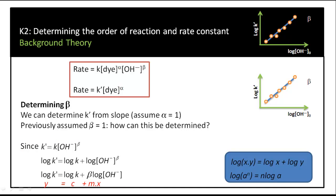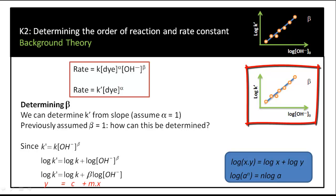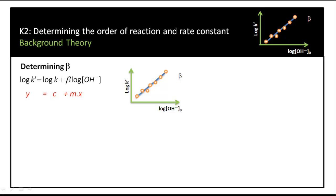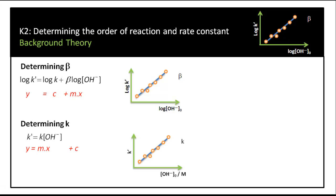In our experiment we will do this several times at several different concentrations of hydroxide ion, measure the pseudo first order rate constant k-prime, and plot this graph to determine beta. We can also determine k, the true second order rate constant, because k-prime equals k times the hydroxide ion concentration. We are going to find that beta equals 1, which means k-prime plotted against hydroxide ion concentration gives a straight line whose slope is the true second order rate constant k.